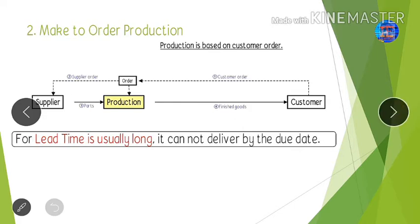In make to order production, when the customer demands the products, we then start production. The lead time for the customer will be high in this system.